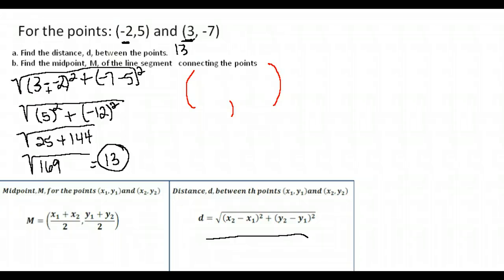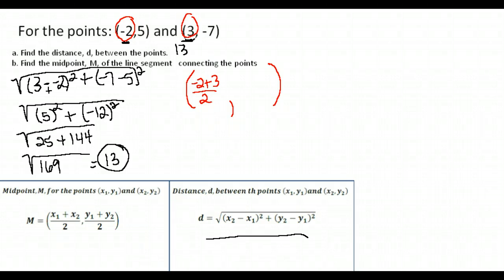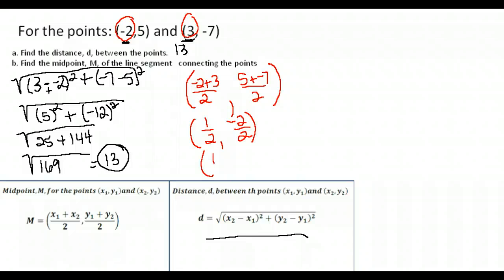Now let's find the midpoint. We add the x values and divide by two for the x coordinate, and add the y values and divide by two for the y coordinate. Our x values are negative two and three: negative two plus three over two. The y values: five plus negative seven divided by two. Negative two plus three is one over two; five minus seven is negative two over two, which equals negative one. Our midpoint was (1/2, -1).